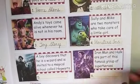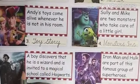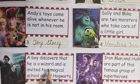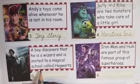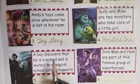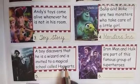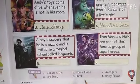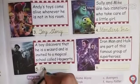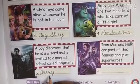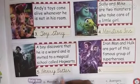Fifth clue: A boy discovers that he is a wizard and is invited to a magical school called Hogwarts. This movie is about a boy who is a wizard and goes to a magical school named Hogwarts. The name of the movie is Harry Potter. We write Harry Potter — H-A-R-R-Y P-O-T-T-E-R.